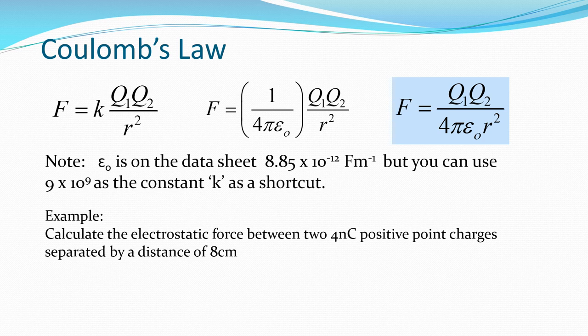For example: calculate the electrostatic force between two 4 nanocoulomb positive point charges separated by a distance of 8 centimetres. When doing this type of question, the charges are often stated in terms of nanocoulombs, which is times 10 to the negative 9, or possibly even smaller. Also, distances are often written in centimetres or even millimetres. You will need to convert nanocoulombs to coulombs using scientific notation and centimetres into metres before attempting any calculations.